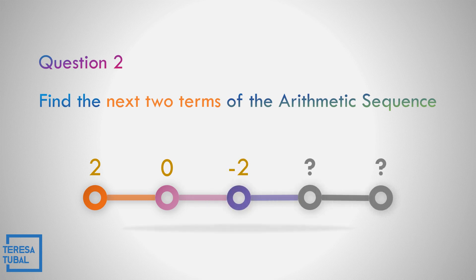Question number two: Find the next two terms of the arithmetic sequence 2, 0, and negative 2. What do you think is the next two terms? Correct. The answer is negative 4 and negative 6, because the common difference is equal to negative 2. 0 minus 2 equals negative 2, so the pattern from first up to the last term is negative 2.